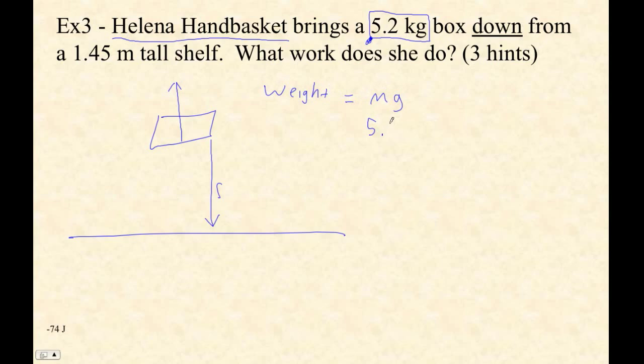And the weight is going to be mg. So step one, if they give you a mass and you're moving it up and down, this is what you've got to do. You've got to figure out the weight: 5.2 times 9.81 equals 51.012 newtons. That's the force.